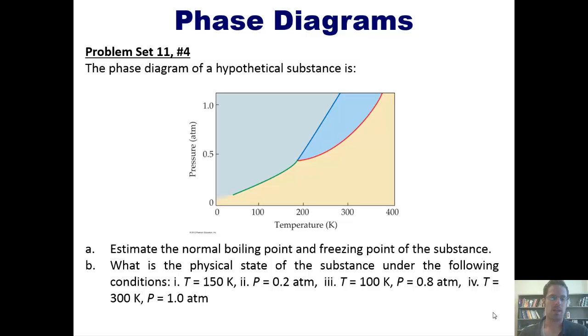So, here's the answer. This first question asks us to estimate the normal boiling point and normal freezing point of the substance. You should remember that the normal boiling point is the temperature at which this substance will convert from a liquid to a gas when you're at one atmosphere pressure. To answer this question, you just have to draw a horizontal line mentally all the way across this diagram, and then determine where it intersects the place between liquid and gas.